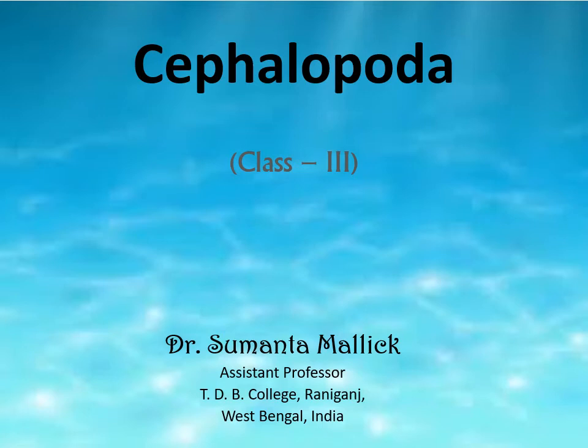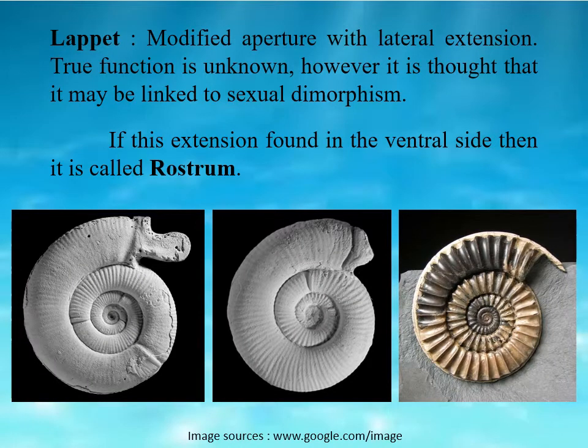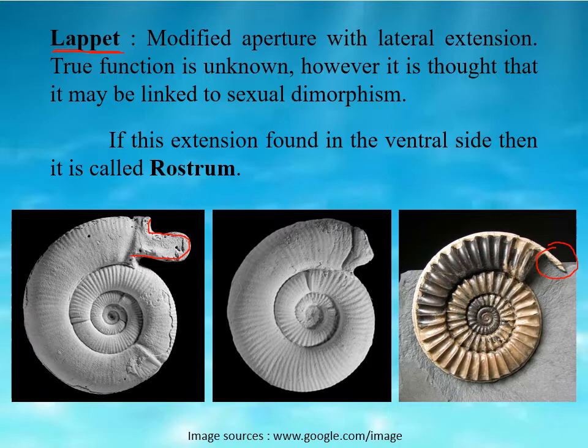Hello, today we'll continue our class regarding the morphology of cephalopods. In some cephalopod shells or fossils, the apertural portion is slightly modified, showing extensions that may occur on the lateral side or the ventral side. These extensions may be large or small, but the apertural smoothness is modified. Extensions on the lateral side or flanks are known as lappets, while extensions on the ventral side are known as the rostrum.